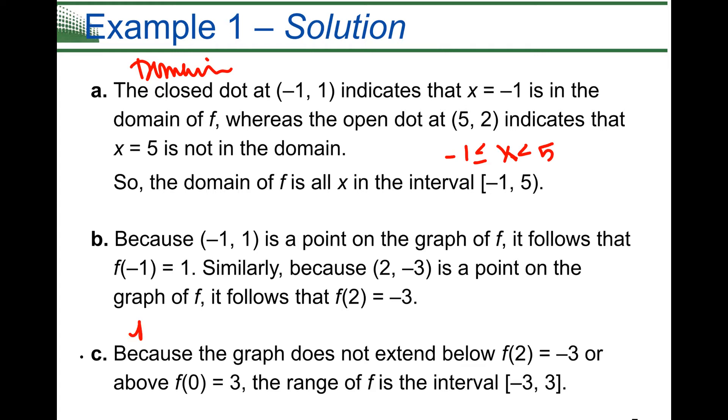And part c, that was your range. It says because the graph does not extend below f of 2 at negative 3 or above f of 0 at 3, then the range is in that interval. And remember we can also write that as an inequality, but this time you have to plug in y because that's when you're talking about your range. And in the middle it says because negative 1, 1 is a point on the graph.